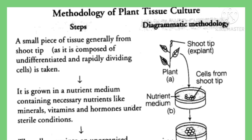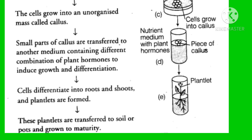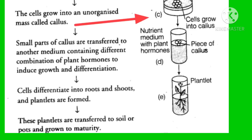In the first step, a small piece of plant tissue is taken. Then it is grown in a nutrient medium containing necessary nutrients like minerals, vitamins, and hormones under sterile conditions. Within days, the cells grow into an unorganized mass called callus.